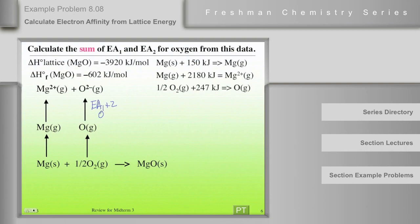And then the last term is the lattice energy, and we're given the lattice energy at negative 3920. So this term is 3920. This term is plus 150. Notice how I've written these here: magnesium plus 150 kilojoules goes to magnesium in the gas. That's to get you to think about thermochemical equations and what it means if the heat is on one side or the other.